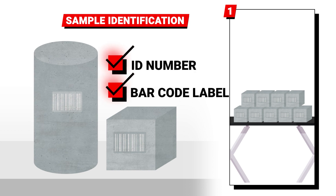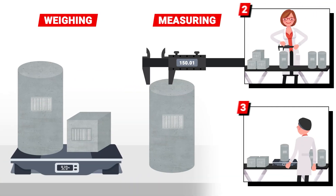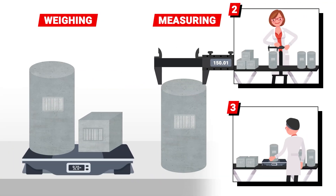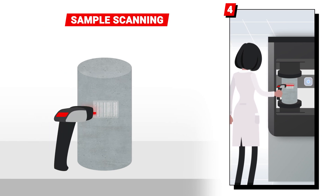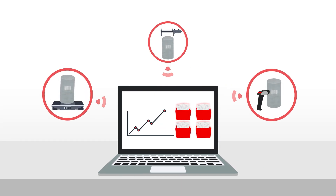On first receiving your concrete sample, your laboratory information management system (LIMS) or corporate ERP systems will generate a label with an ID number and a barcode or QR code. The sample is then weighed and measured on a balance connected to your compression machine. When it's time to start testing, simply scan the specimen's label with your barcode reader.